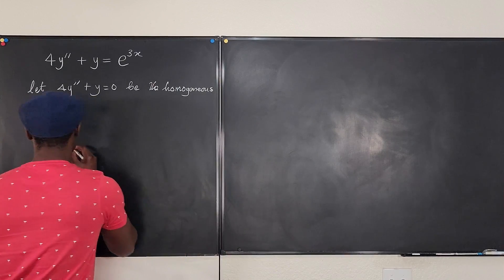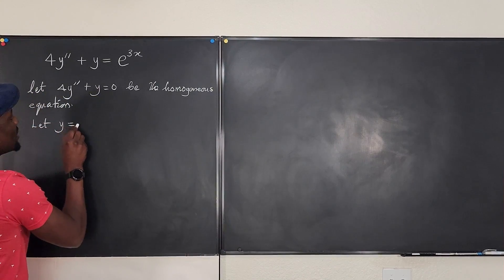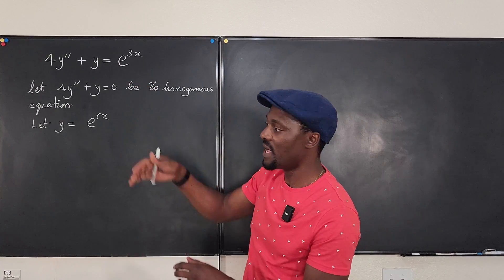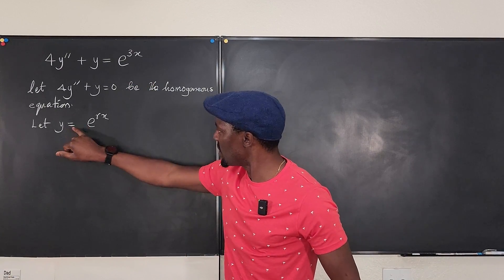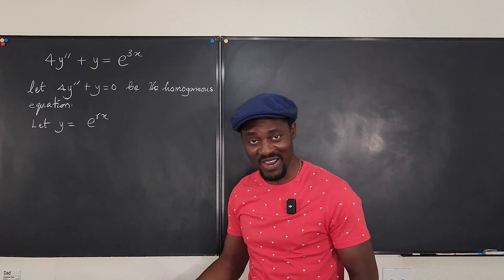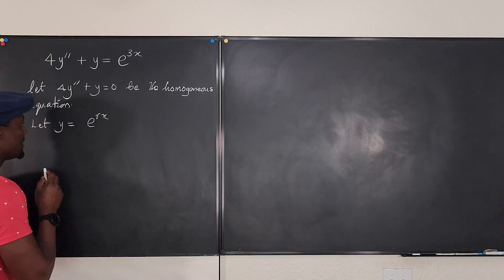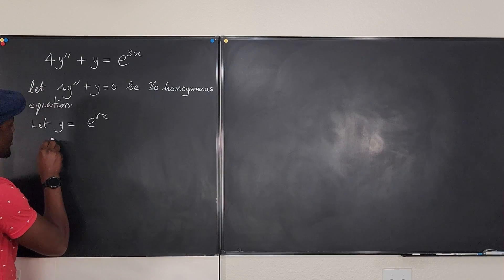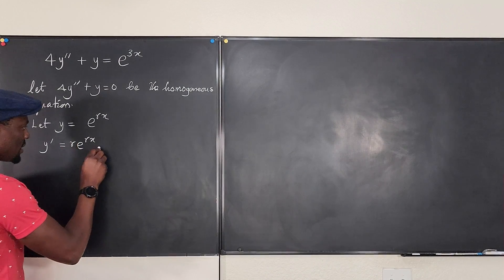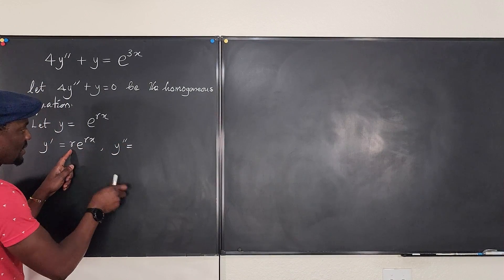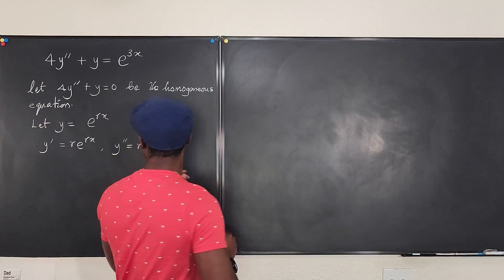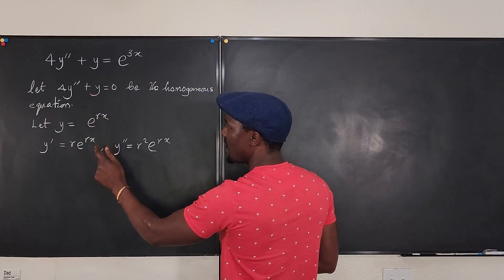We make the assumption that y = e^(rx). When you have something on the right-hand side it gets more complicated — you might guess r = 3, but let's investigate. If y = e^(rx), then y' = re^(rx), and y'' = r²e^(rx).